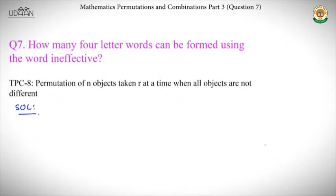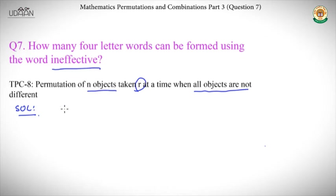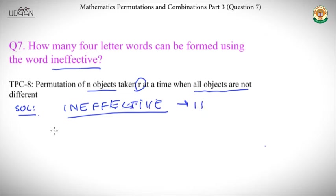We move to question number seven: how many four-letter words can be formed using the word 'ineffective'? We have to form different four-letter words using the alphabets of 'ineffective'. These are the type of problems in which we have n objects and we have to take r at a time when all objects are not different. The word 'ineffective' has eleven alphabets: three E's, two F's, two I's, C, T, N, and V.